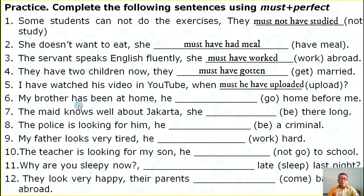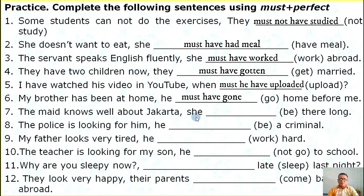Number six: My brother has been at home. He must have gone home before me. Number seven: The mate knows well about Jakarta. She must have been there long.